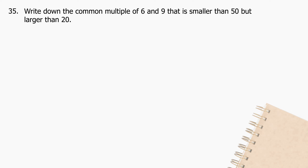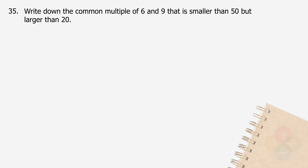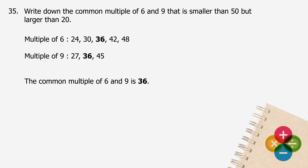Question 35: Write down the common multiple of 6 and 9 that is smaller than 50 but larger than 20. The multiples of 6 between 20 and 50 are 24, 30, 36, 42, and 48. The multiples of 9 between 20 and 50 are 27, 36, and 45. The common multiple of 6 and 9 is 36.